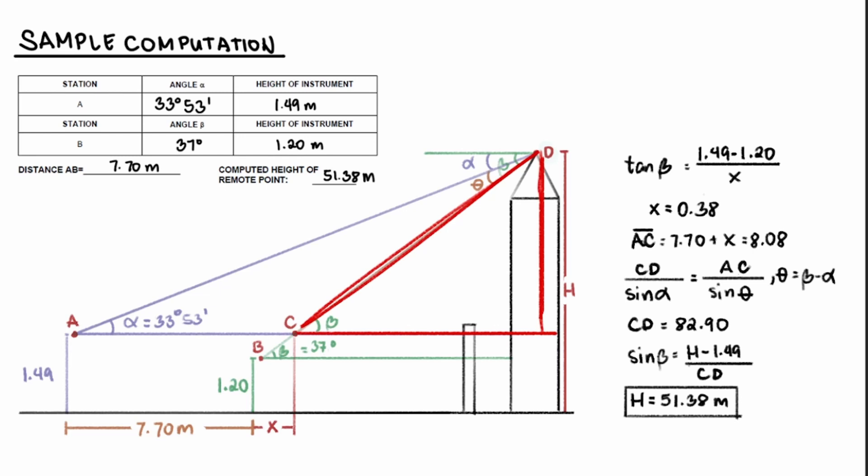Therefore, using the sine function, I can get the length of the opposite side. And the opposite side is just the height of the tower, minus 1.49. So sin beta equals H for the height of the tower, minus 1.49, over the hypotenuse, which is again your side CD. Using this equation, we can solve for H, which is 51.38 meters.